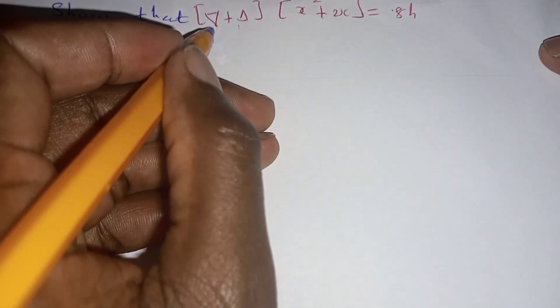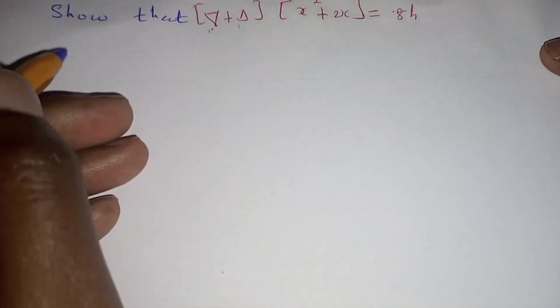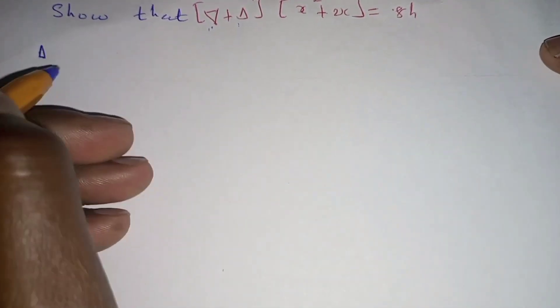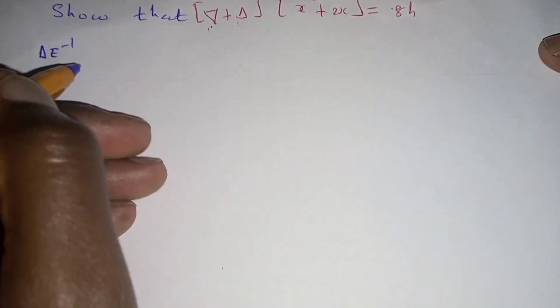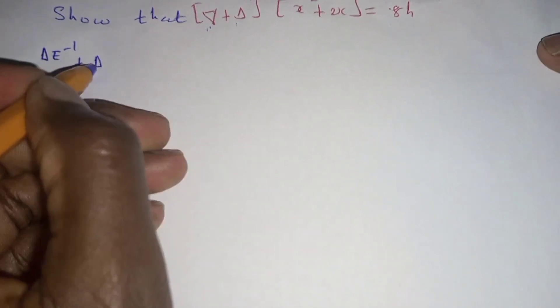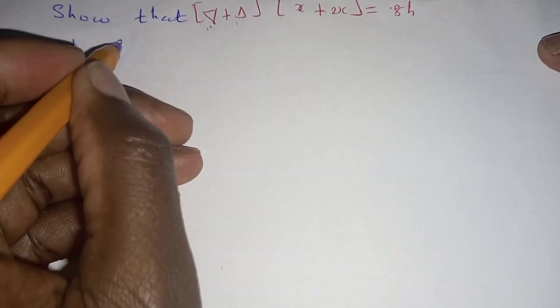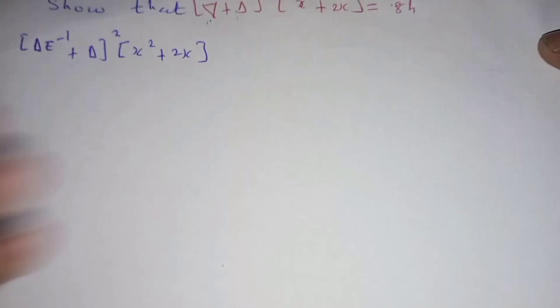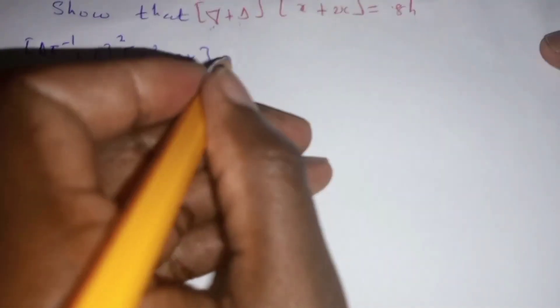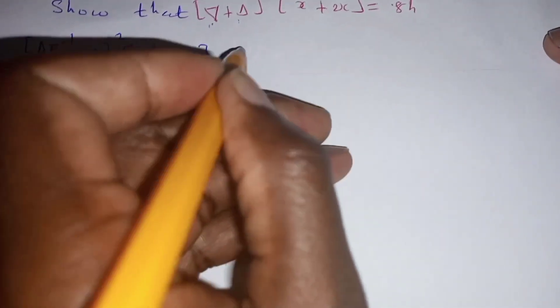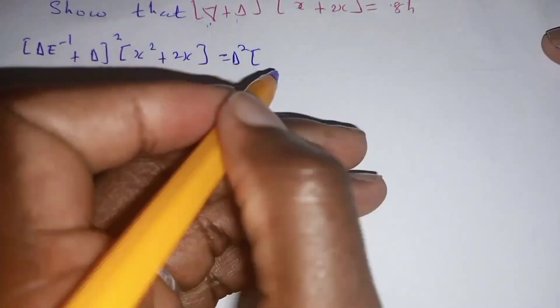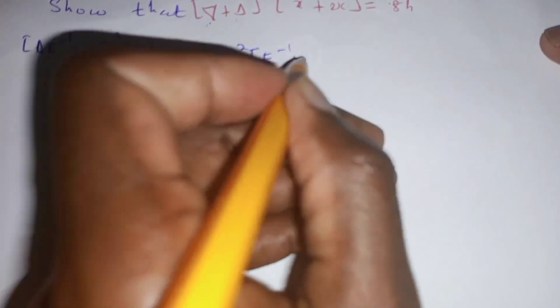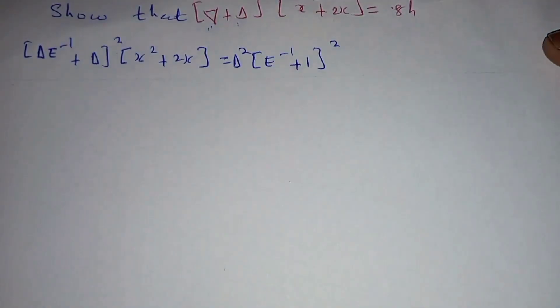To do that, we are going to substitute this backward difference with the fact that it is equal to the forward difference operator multiplied by the shift operator inverse, plus the forward difference operator. Then we square it and submit it to x squared plus two x, everything in brackets. We factor the forward difference operator out and square it.